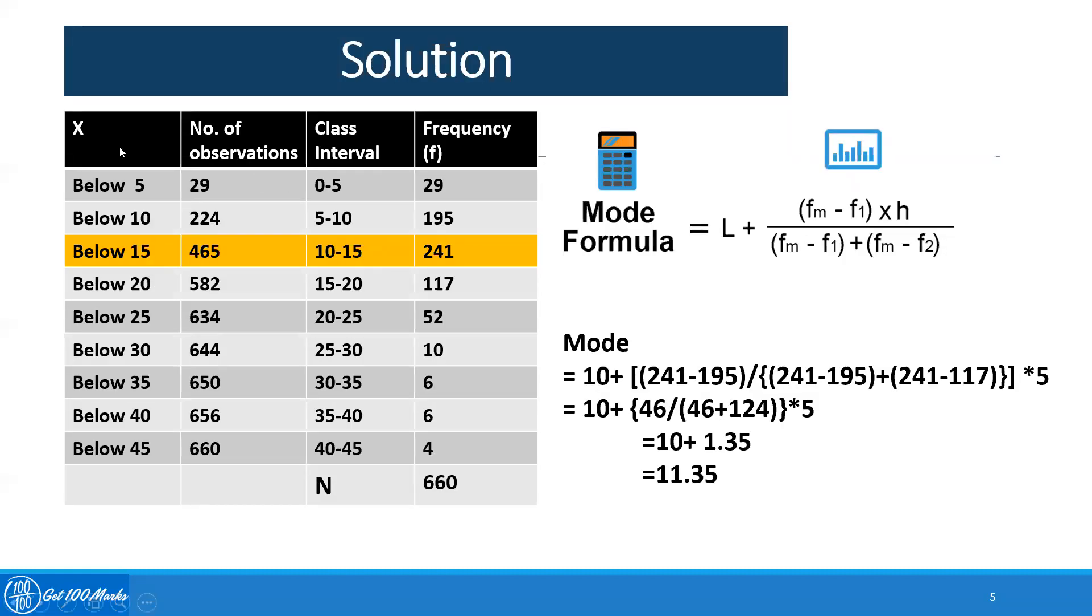I have taken the first column and the second column is the repetition of the question given. So below 5 is 29, I have to make the next column, which is class interval, and the fourth column as your frequency. The class interval below 5 means 0 to 5, and the number of observations is the frequency, which is 29.